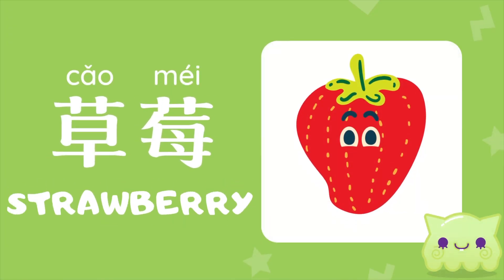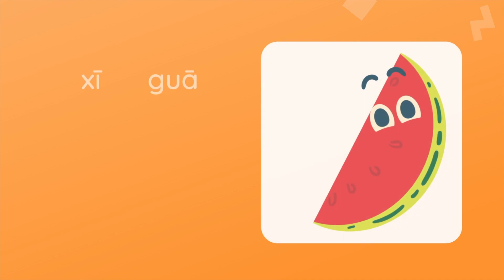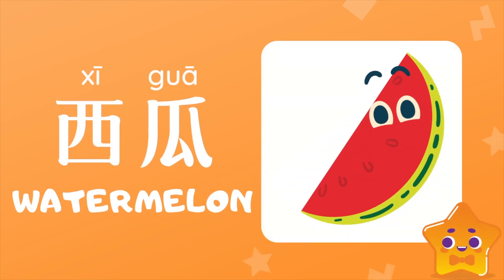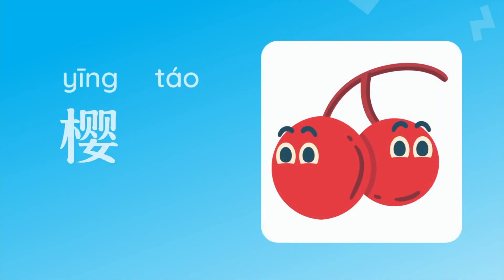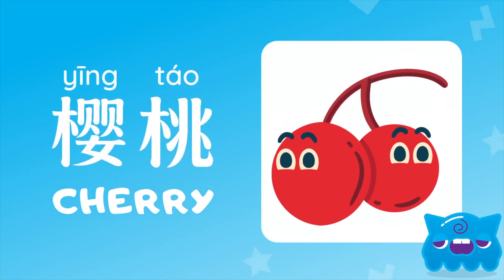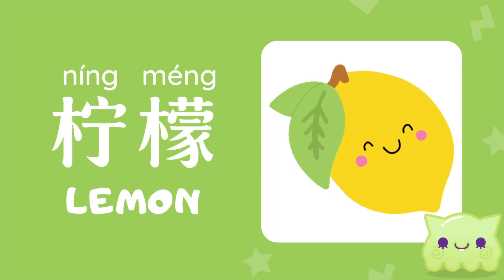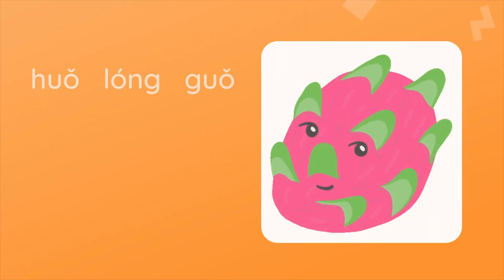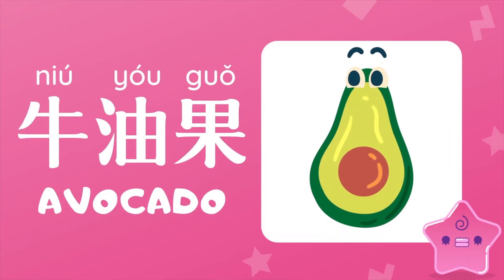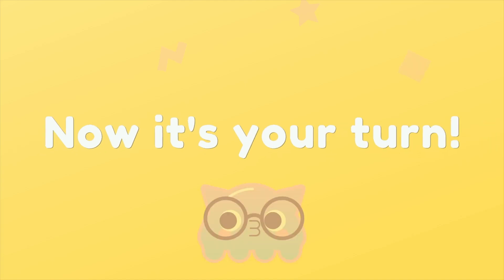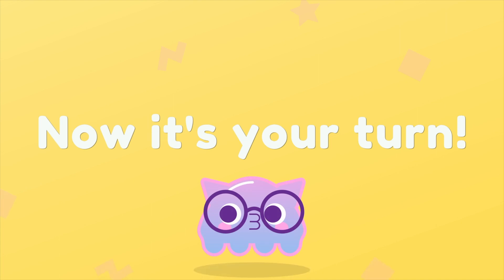桃子. 草莓. 西瓜. 菠萝. 樱桃. 柠檬. 火龙果. 牛油果. Now it's your turn.